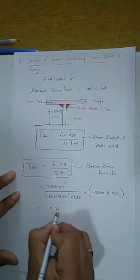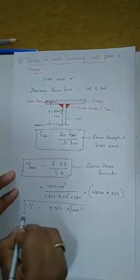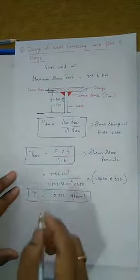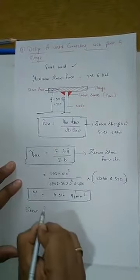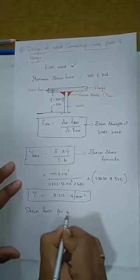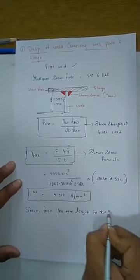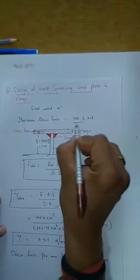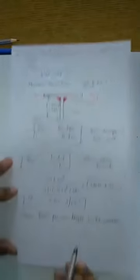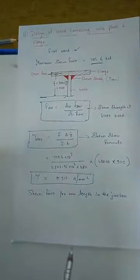Calculating this gives τ = 0.512 N/mm². This is the shear stress acting at the joint. Now, shear force per mm length at the junction: the shear stress is 0.512 N/mm², acting over a width of 480 mm. So shear force per mm length = 0.512 × 480.